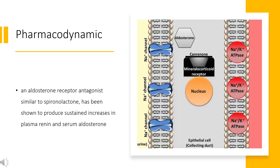Pharmacodynamics. Eplerinone, an aldosterone receptor antagonist similar to Spironolactone, has been shown to produce sustained increases in plasma renin and serum aldosterone, consistent with inhibition of the negative regulatory feedback of aldosterone on renin secretion. The resulting increased plasma renin activity and aldosterone circulating levels do not overcome the effects of Eplerinone. Eplerinone selectively binds to recombinant human mineralocorticoid receptors relative to its binding to recombinant human glucocorticoid, progesterone, and androgen receptors.